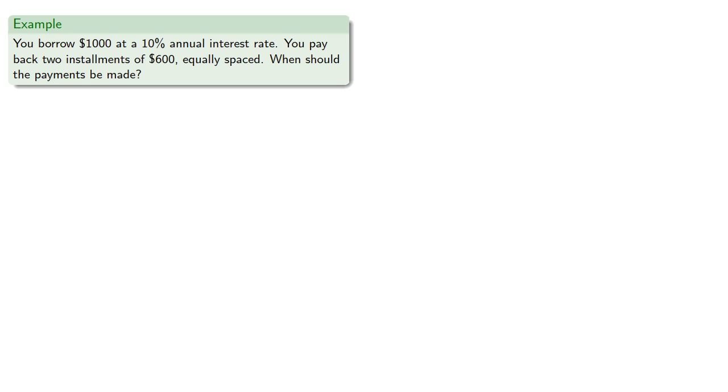For example, let's say you borrow $1,000 at 10% annual interest rate. You pay back two installments of $600 equally spaced. When should the payments be made? So, we'll write down our equation of value, and we want our balance to be 0, so we can replace that, and tau is, well, we don't really know that, so we'll use a time-honored strategy and procrastinate.